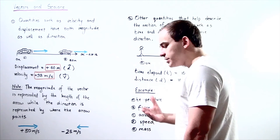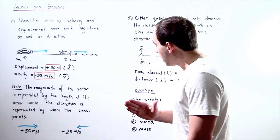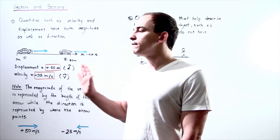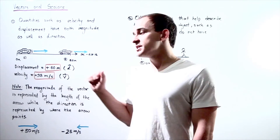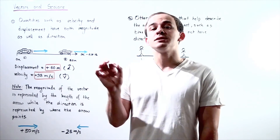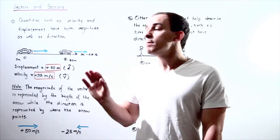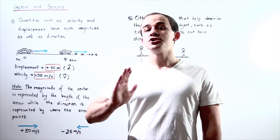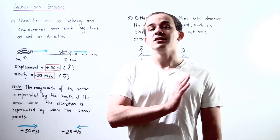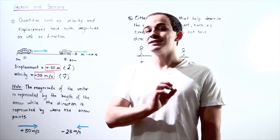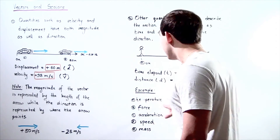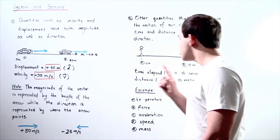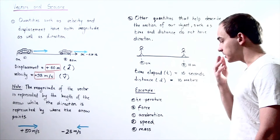What about force? Whenever we apply a force — for example, pushing an object to the right — we have to specify the direction. Pushing to the right is not the same as pushing to the left; there is a difference in direction. Therefore, force, like velocity and displacement, is a vector.